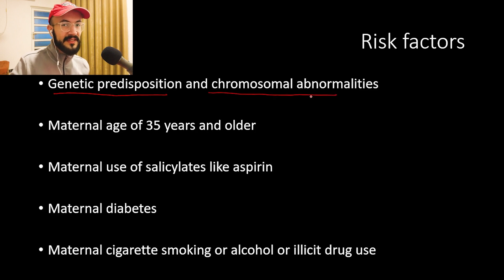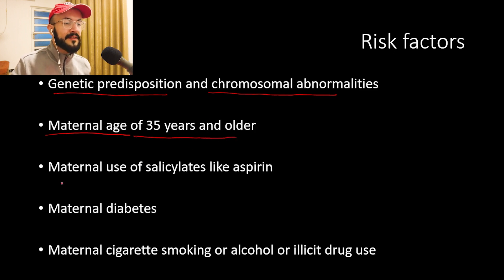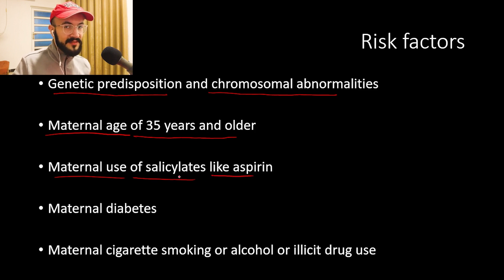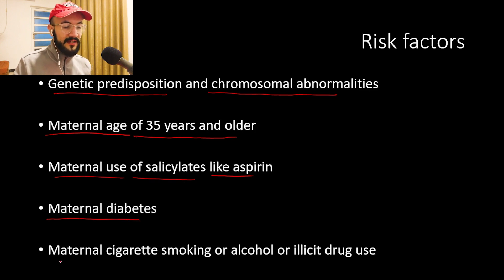The cause of omphalocele is unknown, but risk factors include genetic predisposition, chromosomal abnormalities, maternal age 35 and older, maternal use of salicylates like aspirin and other drugs, maternal diabetes, and maternal cigarette smoking, alcohol use, or illicit drug use.